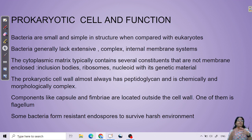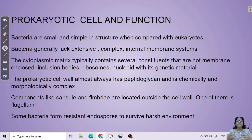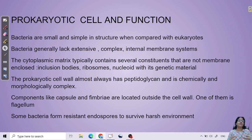The prokaryotic cell wall is made up of peptidoglycan. This is where the difference between gram positive and gram negative bacteria comes in. Gram staining is a technique in microbiology to differentiate both types. Gram positive bacteria have a higher percentage of peptidoglycan compared to gram negative bacteria, so they retain their color and give a purple color under the microscope. Based on the percentage of peptidoglycan, bacteria are differentiated into gram positive and gram negative.